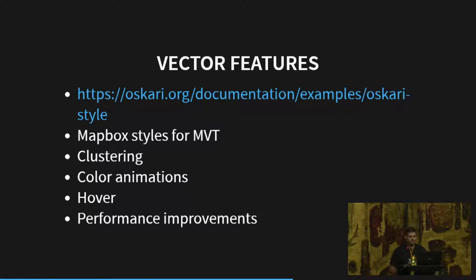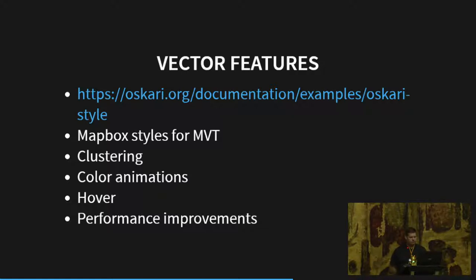Since we are bringing features as vectors to the browser, we really had to step up with the styling. We have a JSON format for styling the features used on the browser, and also for printing — creating PDFs — we use the same JSON format to communicate the style features should be rendered in. It's a simple styling, so we support Mapbox styles as well. Clustering has been added for the features in the front-end, we can do color animations, and you can hover the vector features on the browser. We've improved performance as well.